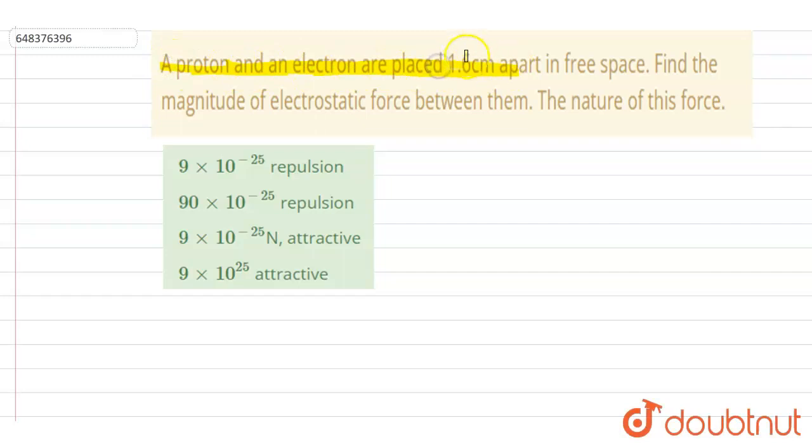Hello everyone. A proton and an electron are placed at 1.6 centimeter apart in free space. Find the magnitude of electric force between them and the nature of this force. So if I write down the electric force between them, it is K q1 q2 by r square from Coulomb's law.